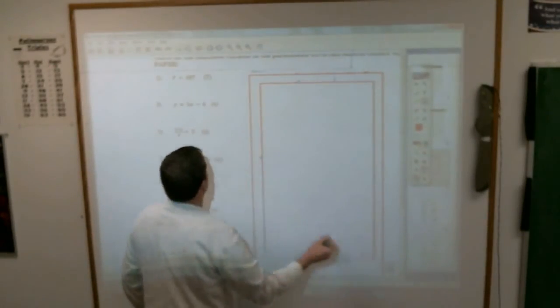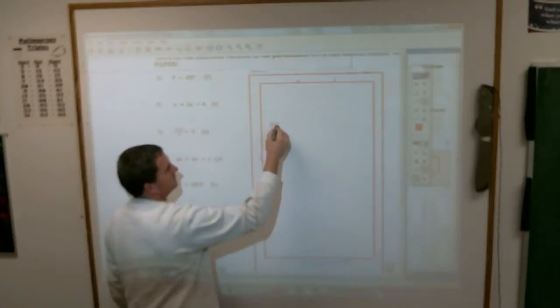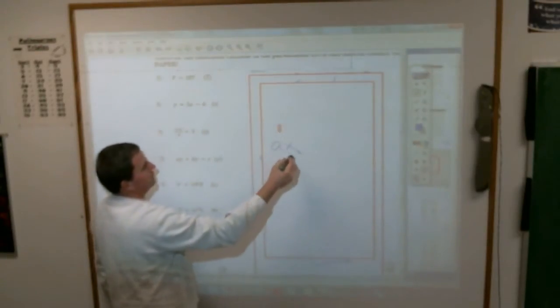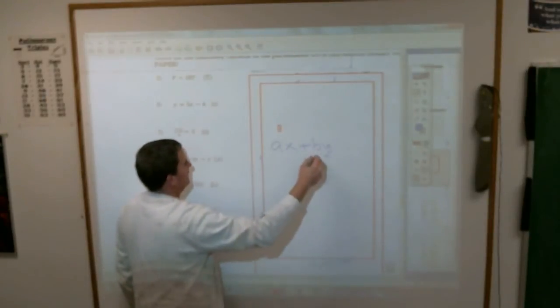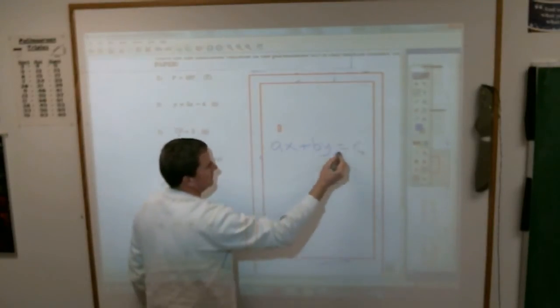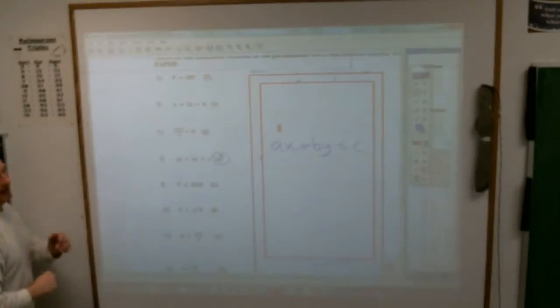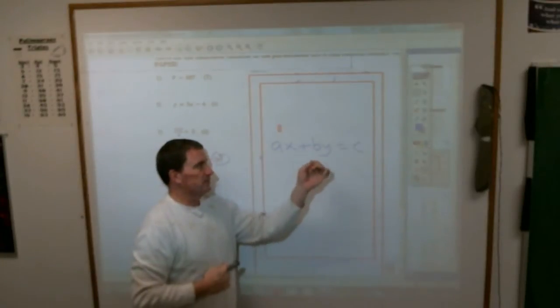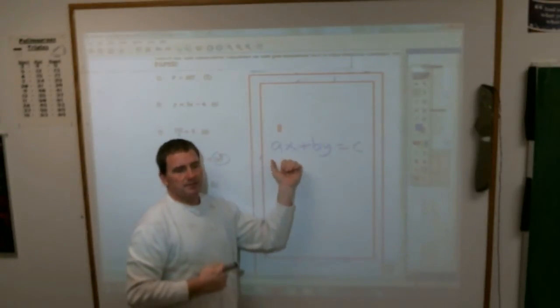If I am taking this equation here, AX plus BY equals C, and they want us to solve for the letter Y. We usually say you just want to isolate the variable that you want. So I want to get the letter Y by itself, which means I've got to get rid of both this B and this AX.